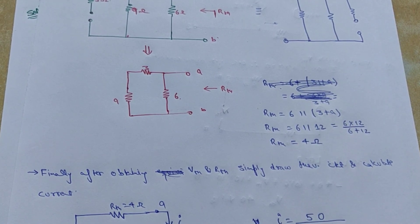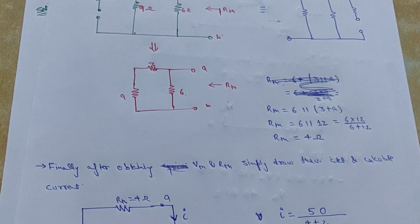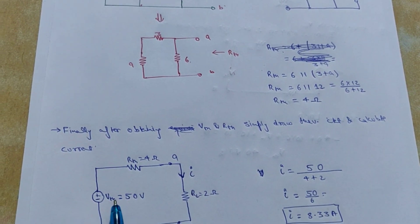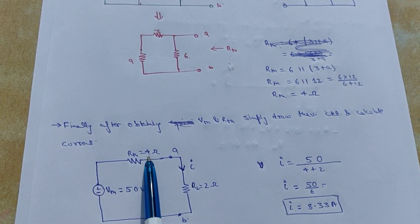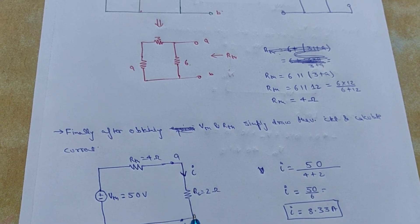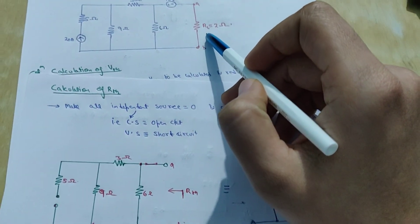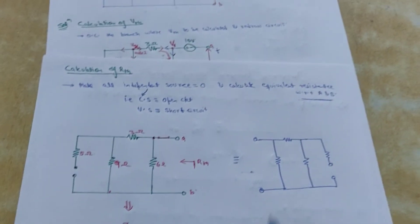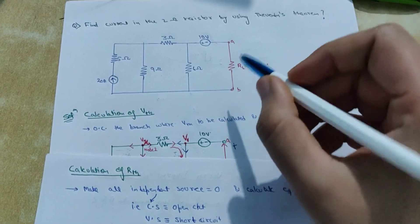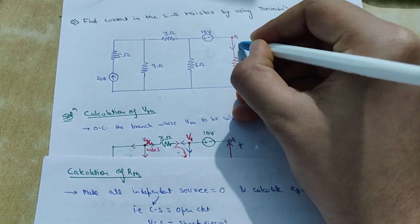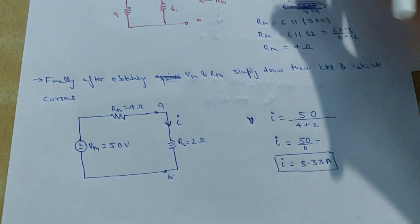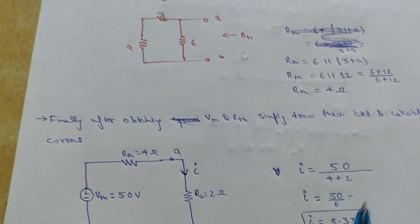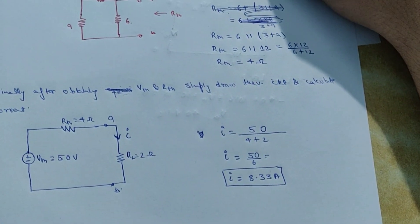The third and final step is to redraw the equivalent Thevenin circuit. VTH is 50 volts and RTH is 4 ohms. We simply redraw the circuit and add back the load resistance that was removed in the first step. We can then calculate the current I flowing in the 2-ohm resistor: I equals 50 divided by 4 plus 2, which gives 8.33 amperes.